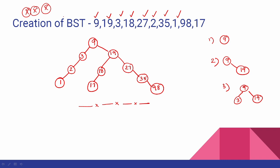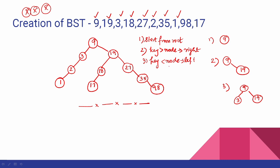Creation of BST: start from the root. Keep comparing. To insert an element — the key — if the key value is less than the node, go to the left. If the key value is greater than the node, go to the right. This is the creation of a BST.